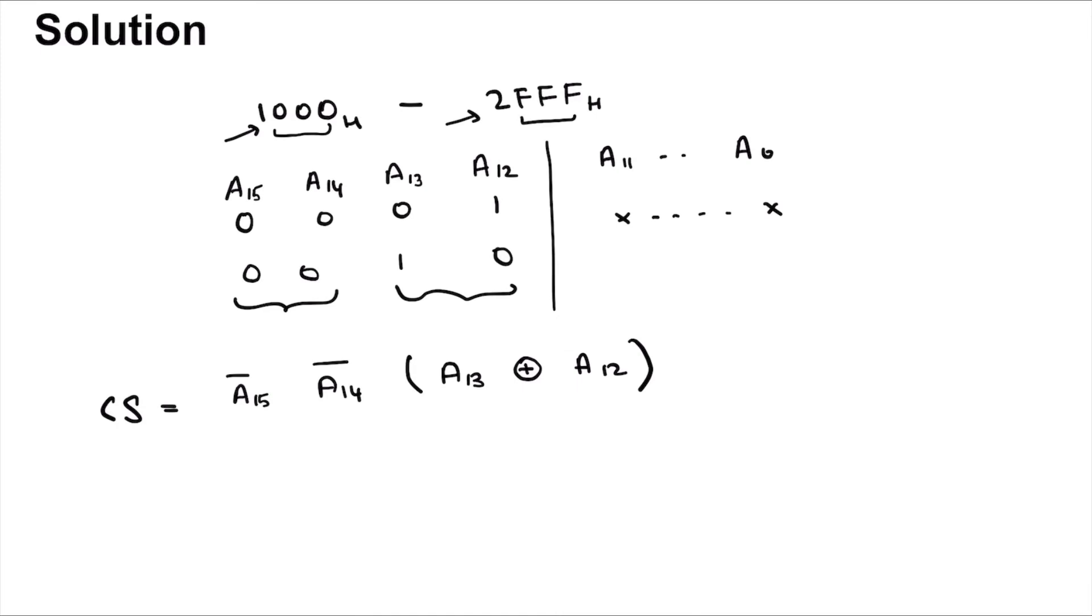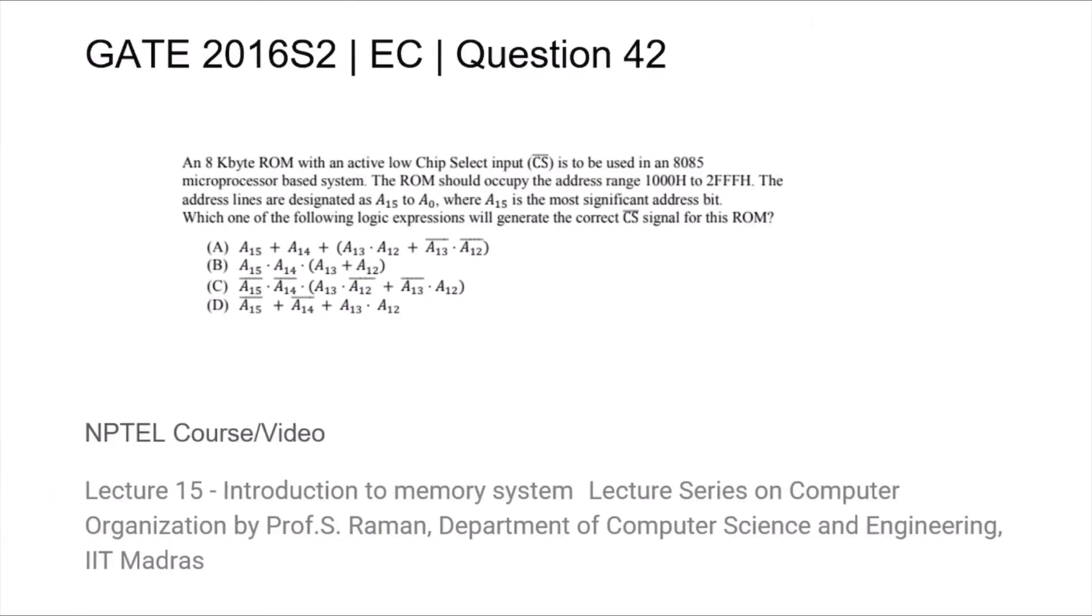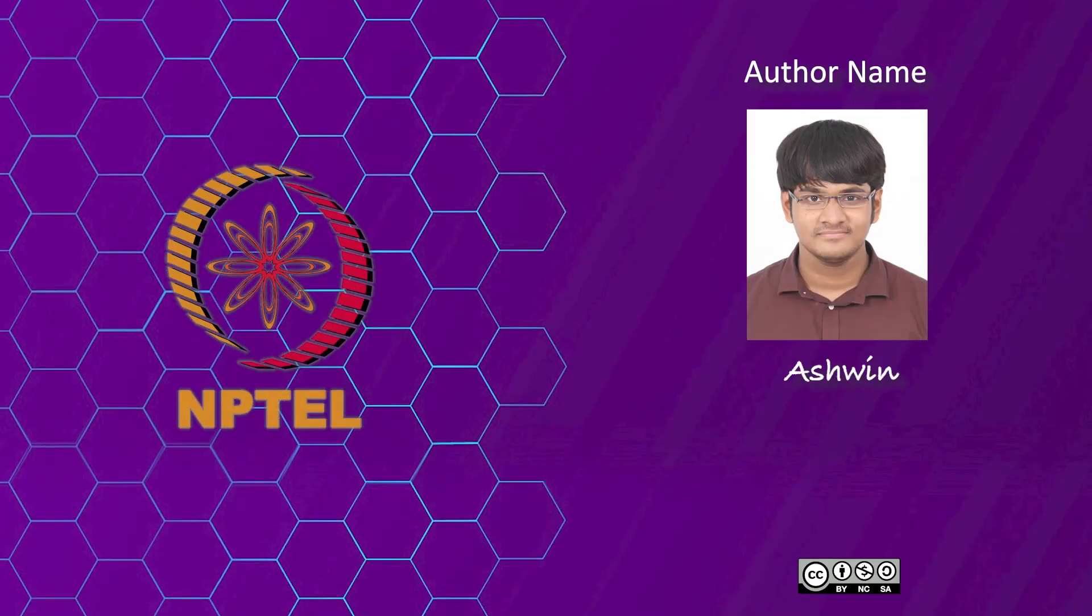But what we need is an active low chip select. So CS bar is a15 OR a14, a13 OR... what is the complement of XOR? It's XNOR. So a13 XNOR a12, or a13 bar a12 bar. Thus, the answer is option 5 or 6.